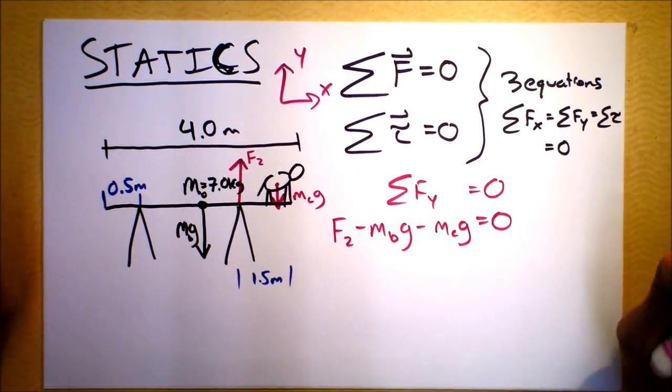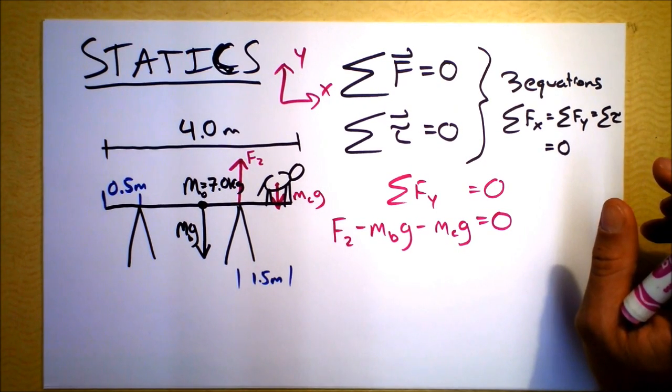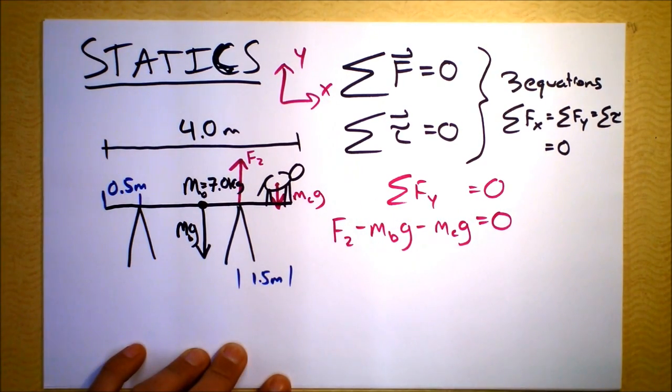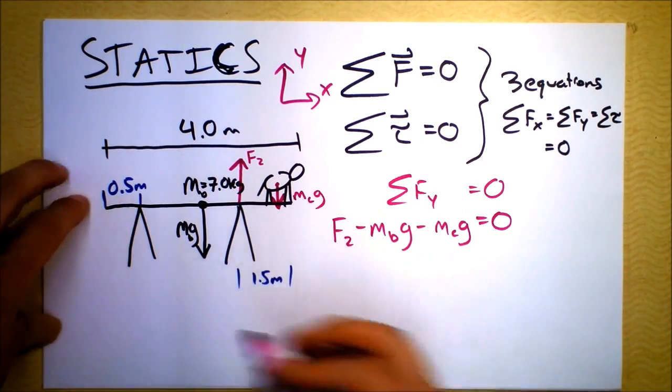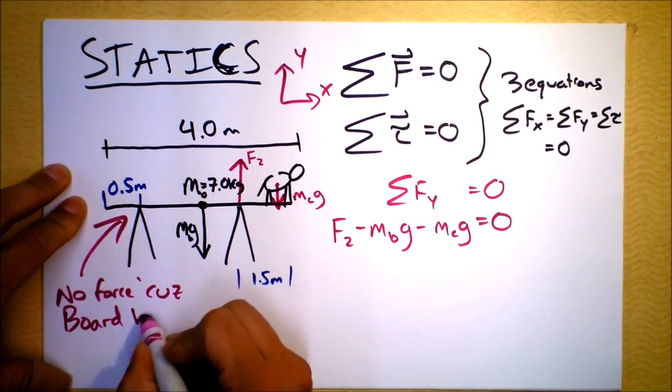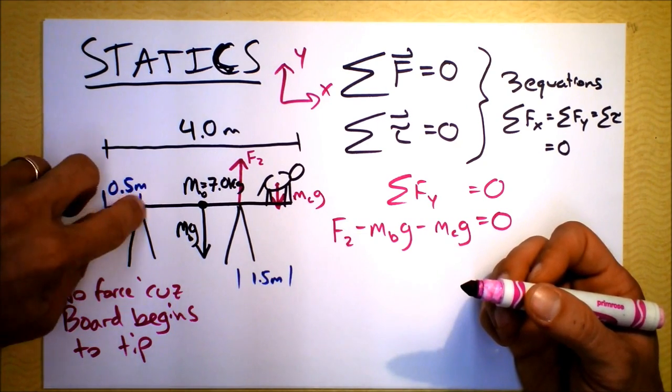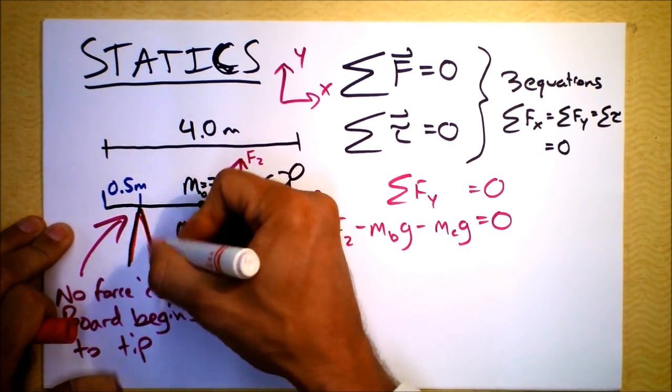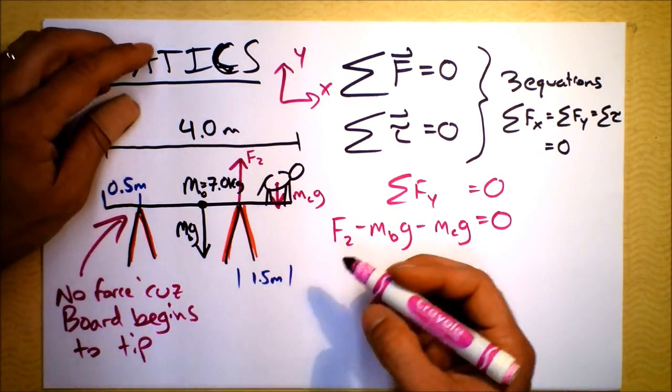Our next equation is a torque equation, and there are many ways to do it. Let's first find what we're trying to find - what do you want? It says find the mass of the cat if the board just begins to tip. That's why we're saying there's no force over here. If the board is just beginning to tip, then there will be no force, no normal force between the board and that sawhorse.